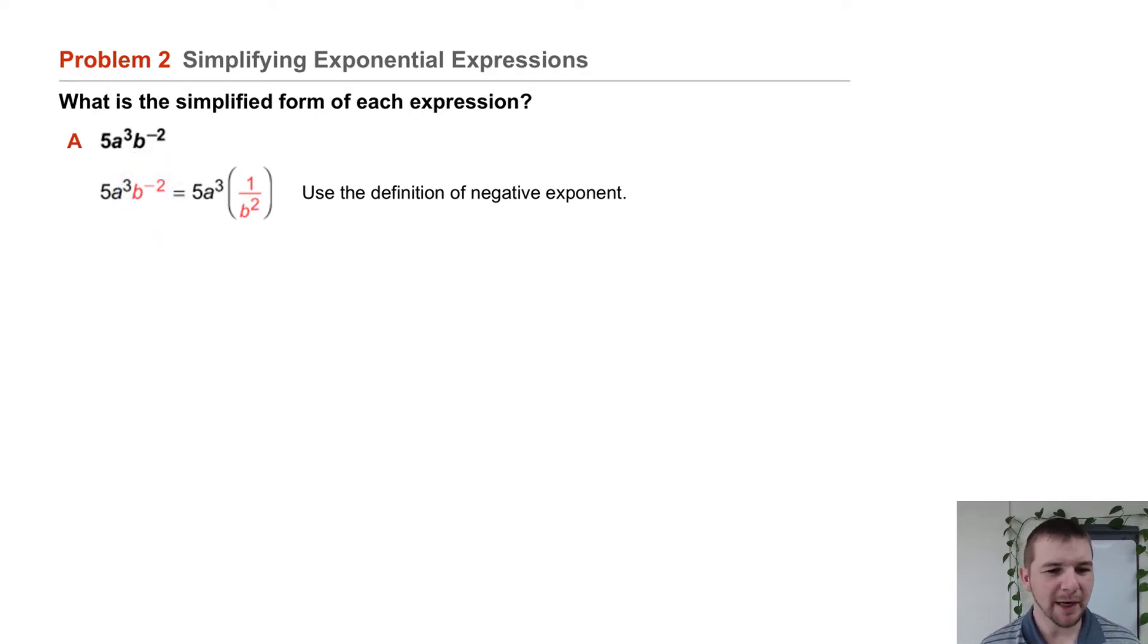We know b to the negative 2 power is the same thing as 1 over b squared, so we rewrite it that way. In the expression we find 5a cubed times 1 over b squared, and then we multiply those to simplify. It's simply 5a cubed over b squared.